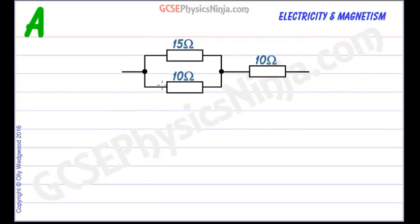First of all we need to combine the two resistors that are in parallel and the formula for doing that is that 1 upon the combined resistance of the two in parallel or the total resistance RT is equal to 1 upon R1 plus 1 upon R2.